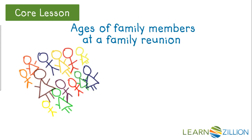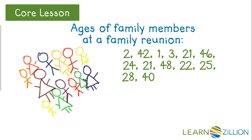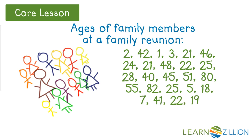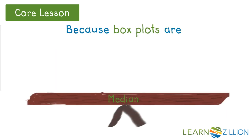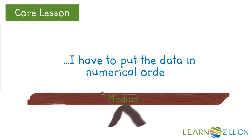I want to represent the ages of family members at a reunion using a box plot. Because box plots are based on the median, I have to put the data in numerical order.